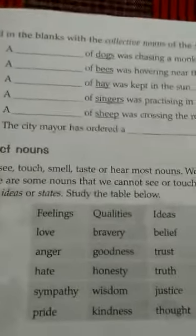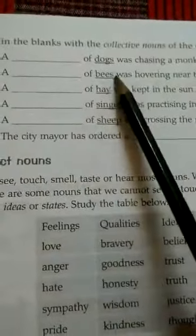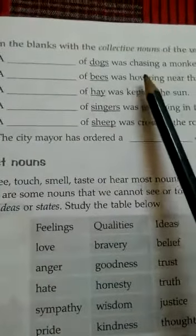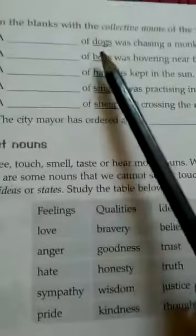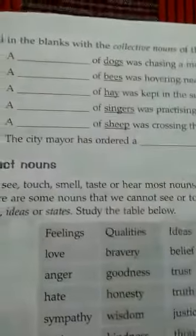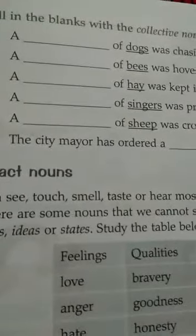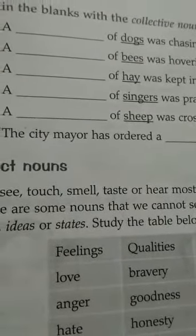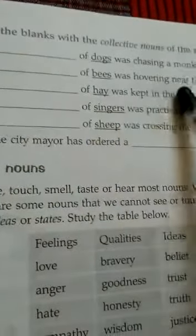Now we have some exercises related to this. First: 'A dash of dogs was chasing a monkey.' We have a group of dogs — what do we call a group of dogs? A group of dogs is called a 'pack,' or we can also say 'kennel' for a group of dogs. So you write here: 'A pack of dogs was chasing a monkey.'